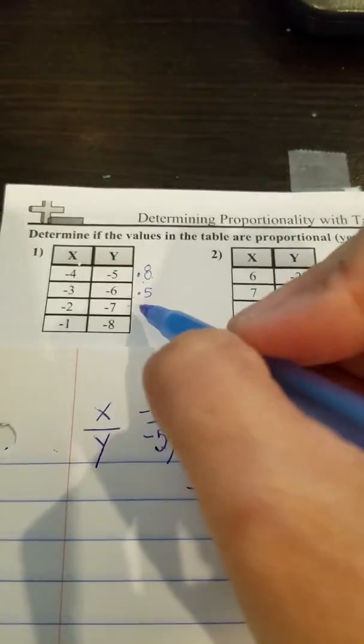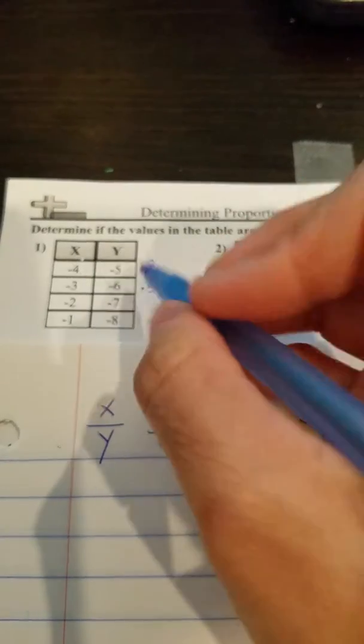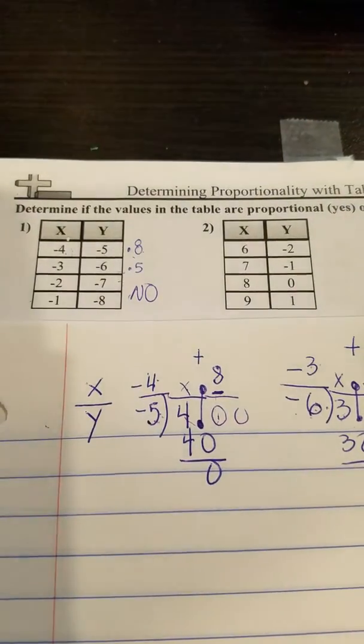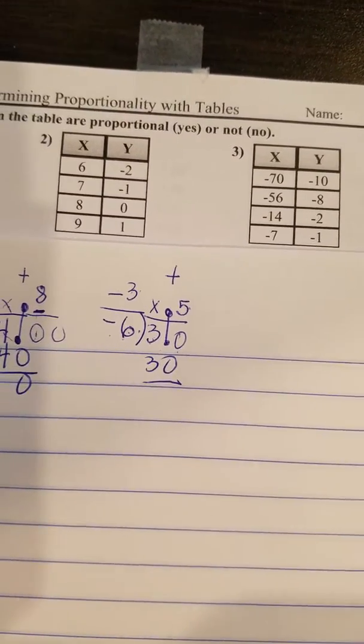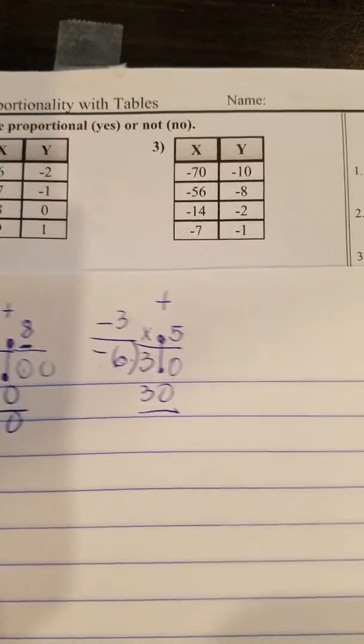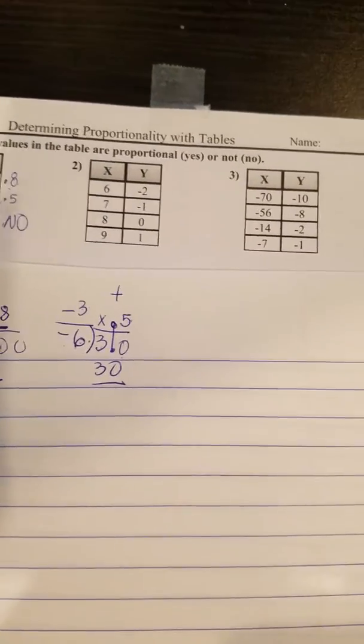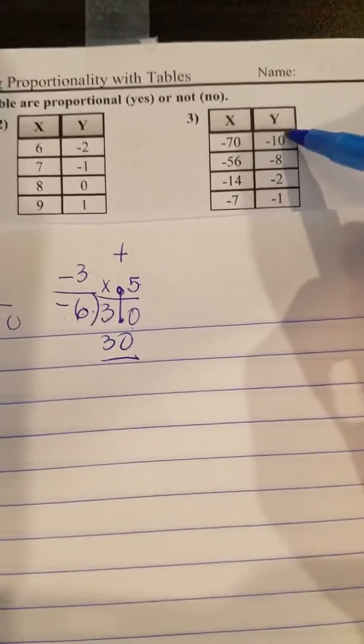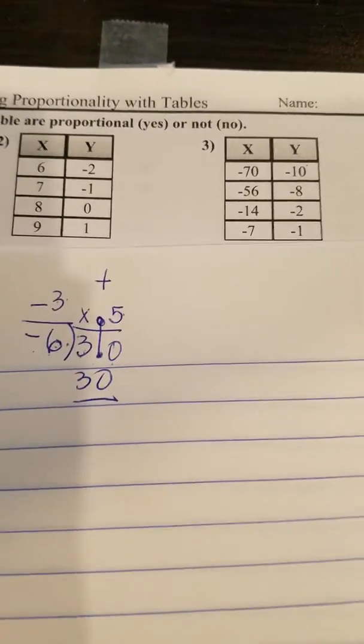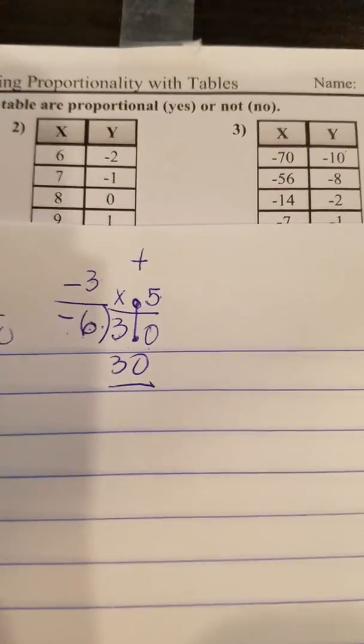So I already know. I don't even have to continue. I already know that no, this is not proportional. Let's go to number 3. And then I want you to do number 2 on your own. But let's go to number 3. Because I can already tell that this is proportional without even having to do that. And I'm going to tell you why I know that.